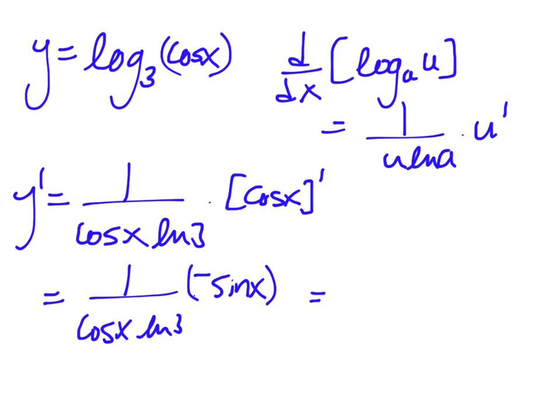I'll actually rewrite one more step, so negative sine x over cos x times ln of 3. If you want to reduce this down, this is probably an obvious simplification. Sine over cos is tan, so this would be negative tan x over ln of 3, just like that.